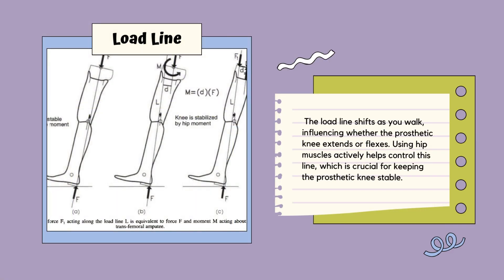Next is the load line, which is the main force acting on the prosthetic knee while bearing weight. It doesn't usually run straight from the hip to the ankle, or from the socket to the foot center. This line will shift as you walk, and it will influence knee extension and flexion. Using the hip muscles actively can help stabilize the knee.